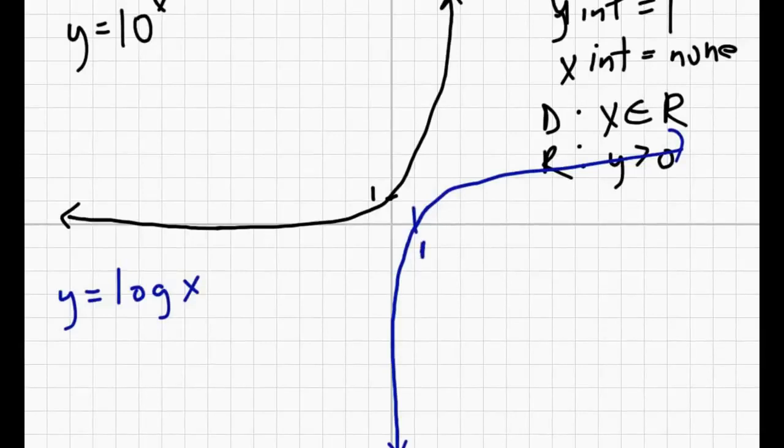So you can see what I mean when I say diagonal reflection, it's sort of like if we drew a diagonal line like that, down the middle, you can see one graph is just sort of a reflection of the other.